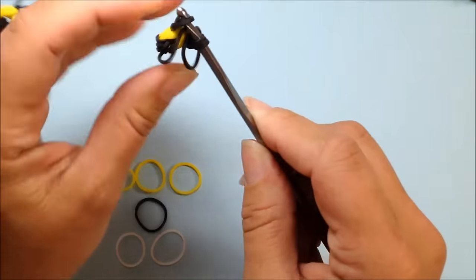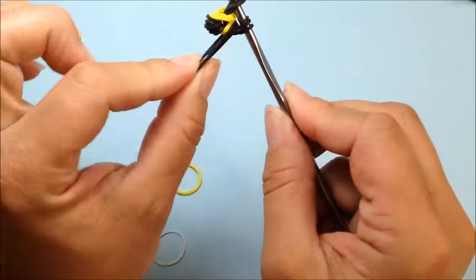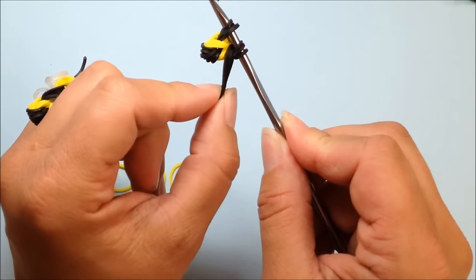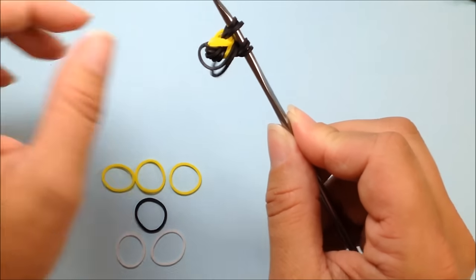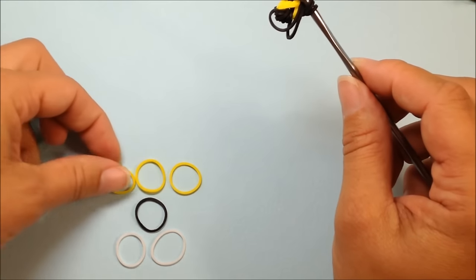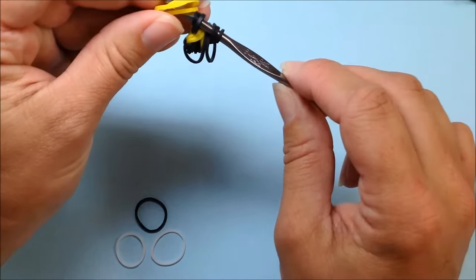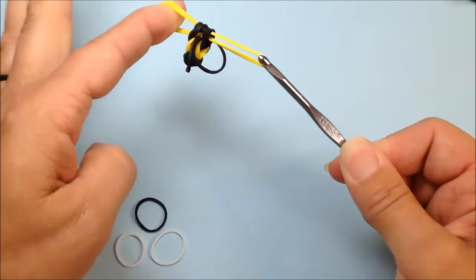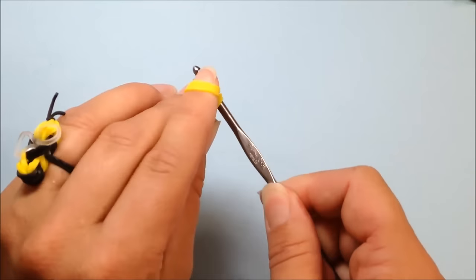When you reclaim, you just kind of want to check and make sure that these bands are dangling in the same direction. Next step will be to take our three yellows and pull through and reclaim again.